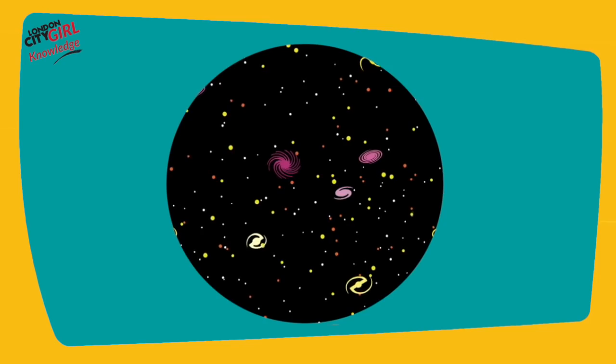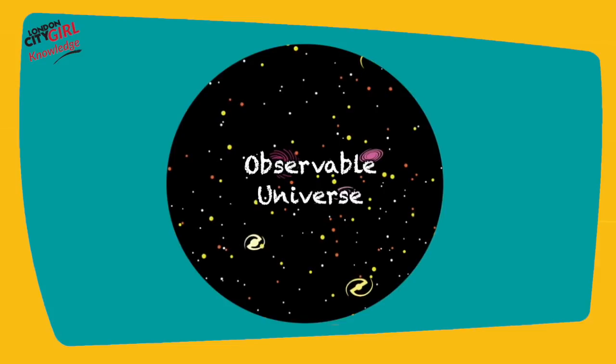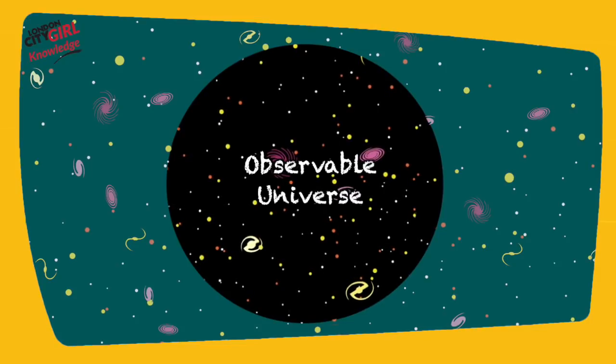We can only measure the observable universe, which may be part of a much larger universe which might not be flat. The analogy that is often used is how an ant sitting on the surface of a large inflating balloon would assume that the surface it is sitting on is flat because that is how it would always appear to him from his tiny perspective.